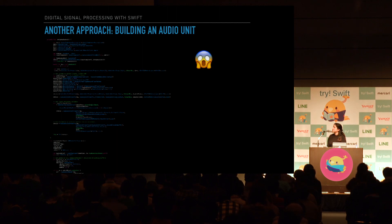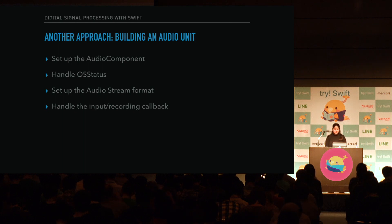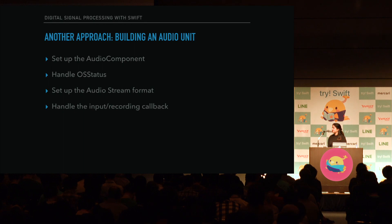The necessary steps to build an audio unit include configuring the input and output bus configurations, preferred IO buffer duration, setting up the audio component, handling OS status, and setting up the input and recording callback struct. The list goes on, but for brevity we won't go in-depth. If you've noticed a trend here, it seems like Swift may not be the best option for audio processing — there seem to be a lot of caveats.